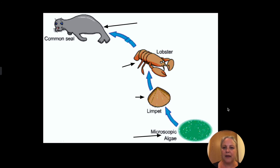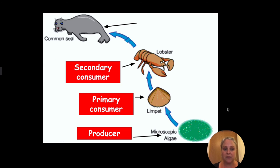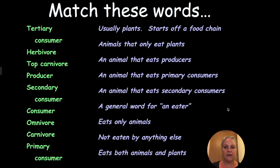Finally, you can see a food chain with producers, which make their own energy, primary consumers which eat producers, secondary consumers which eat primary consumers, and top carnivores. Your last activity is to go through these pieces of terminology on the left and match them up with the definitions on the worksheet — just write down the word that matches each description. Also on the worksheet there's a task to go through another food web and answer some questions about it.